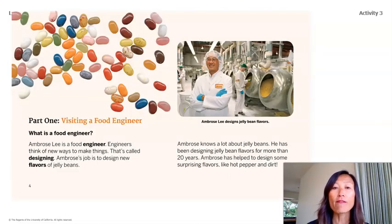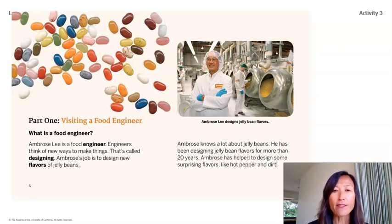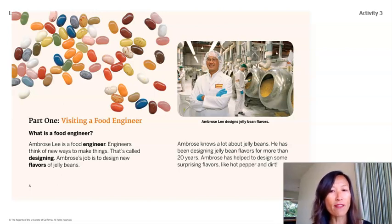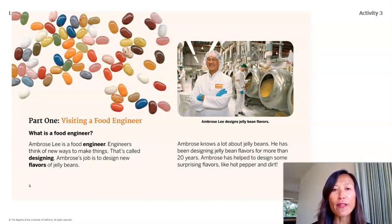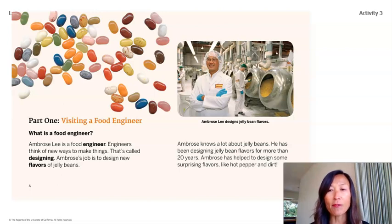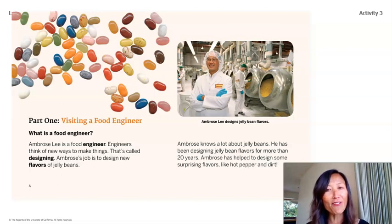Part 1: Visiting a Food Engineer. Ambrose Lee is a food engineer. Engineers think of new ways to make things — that's called designing. Ambrose's job is to design new flavors of jelly beans. He has been designing jelly bean flavors for more than 20 years and has helped design some surprising flavors like hot pepper and dirt.